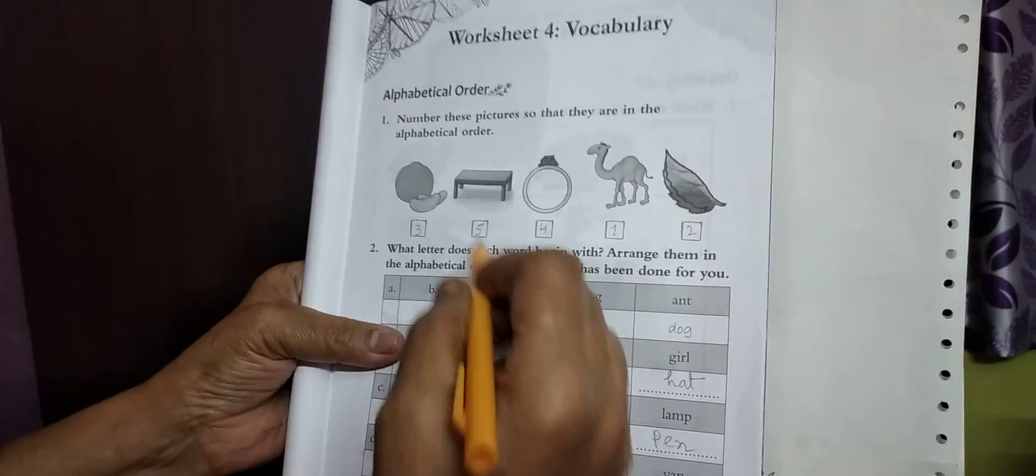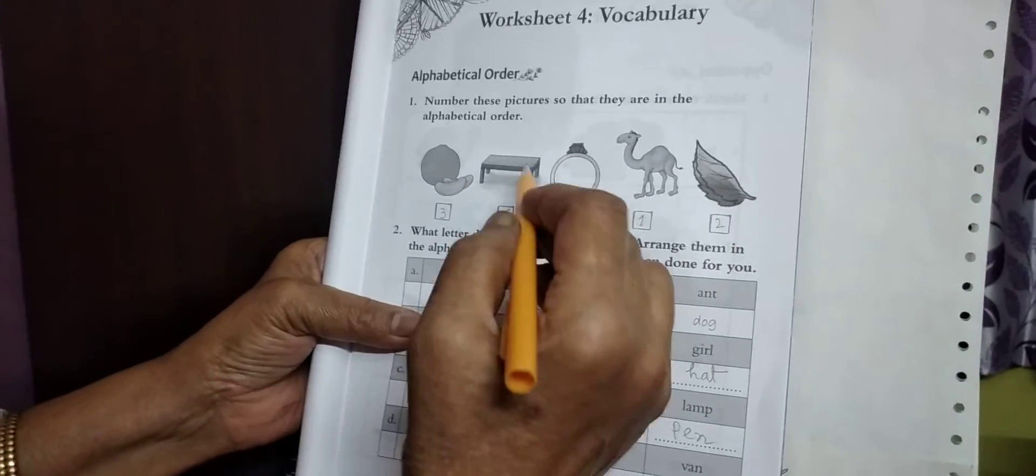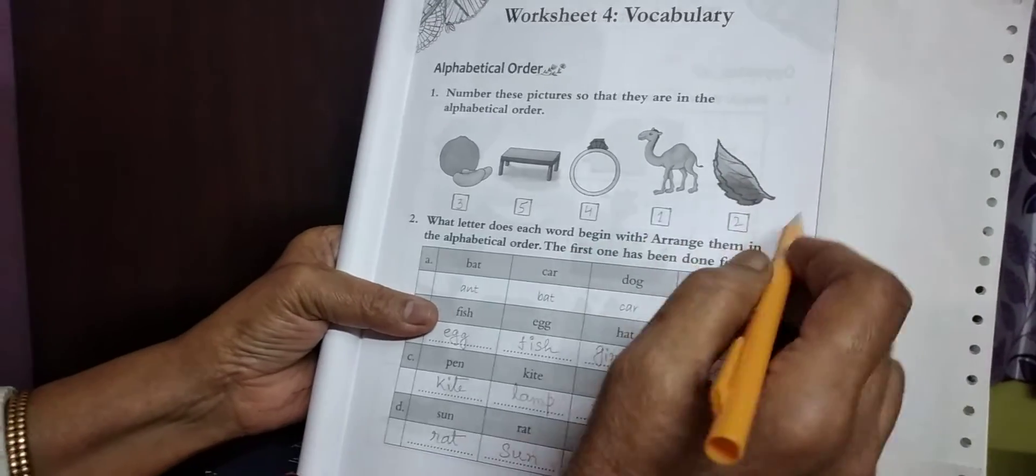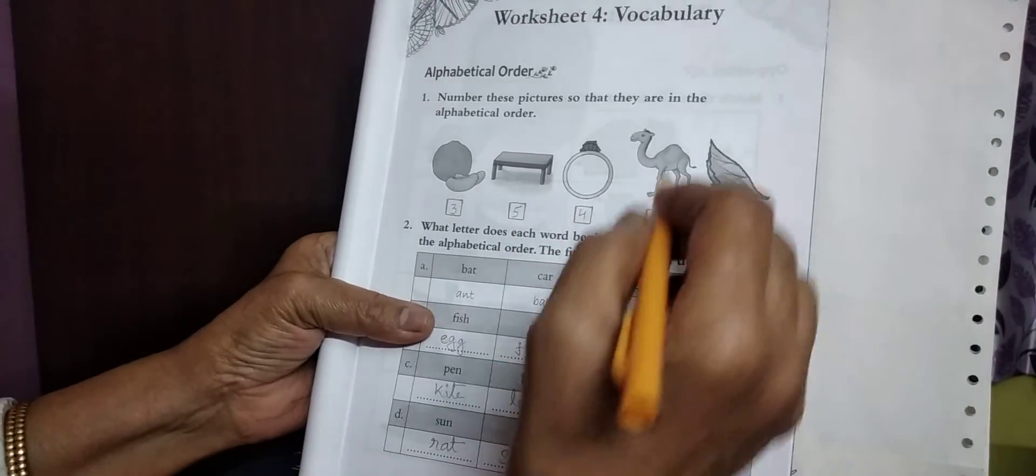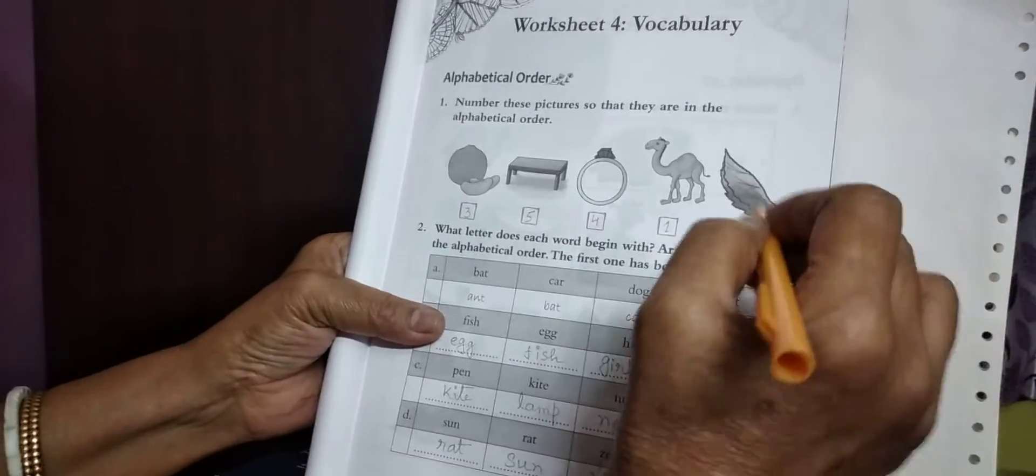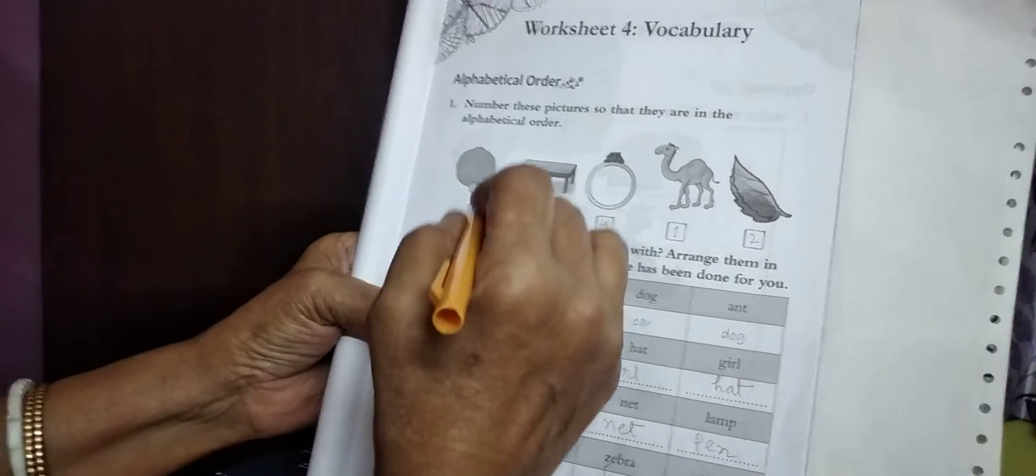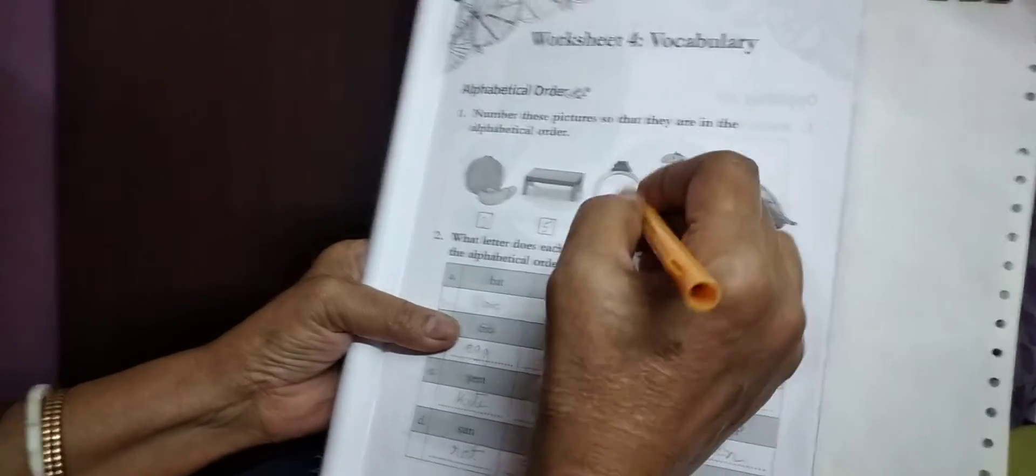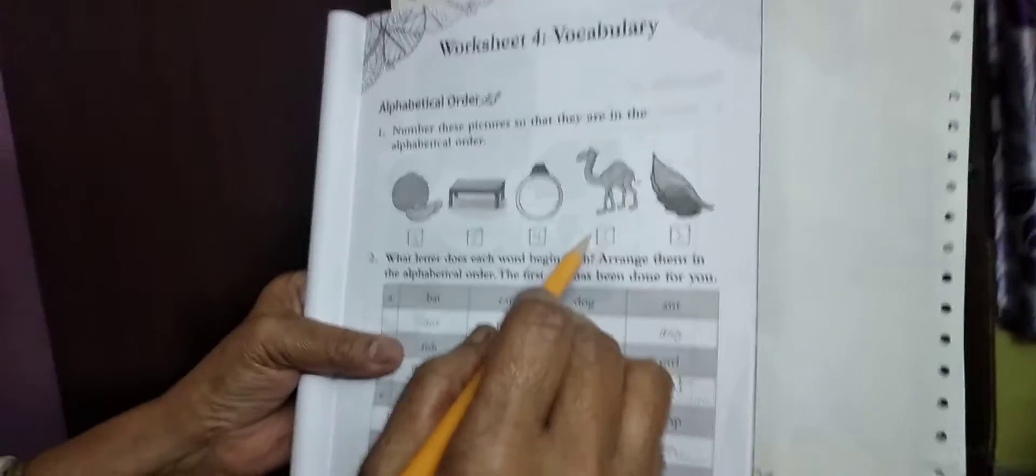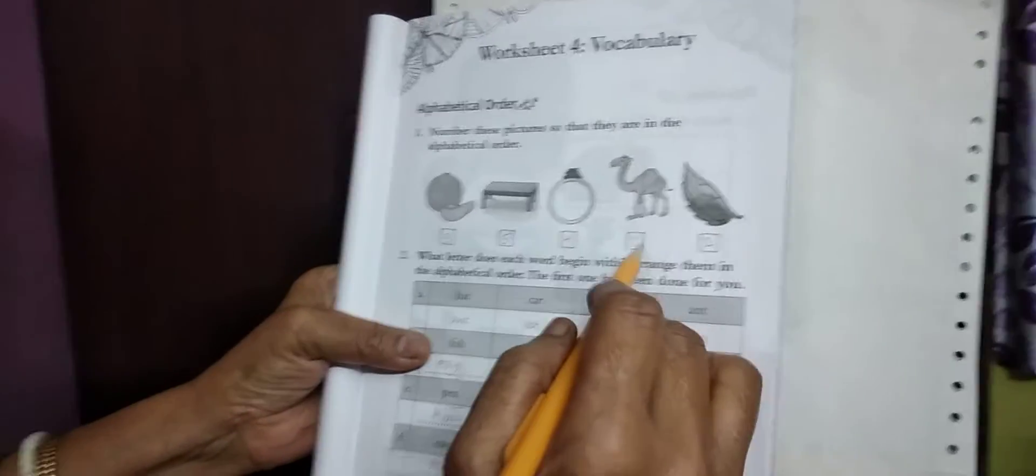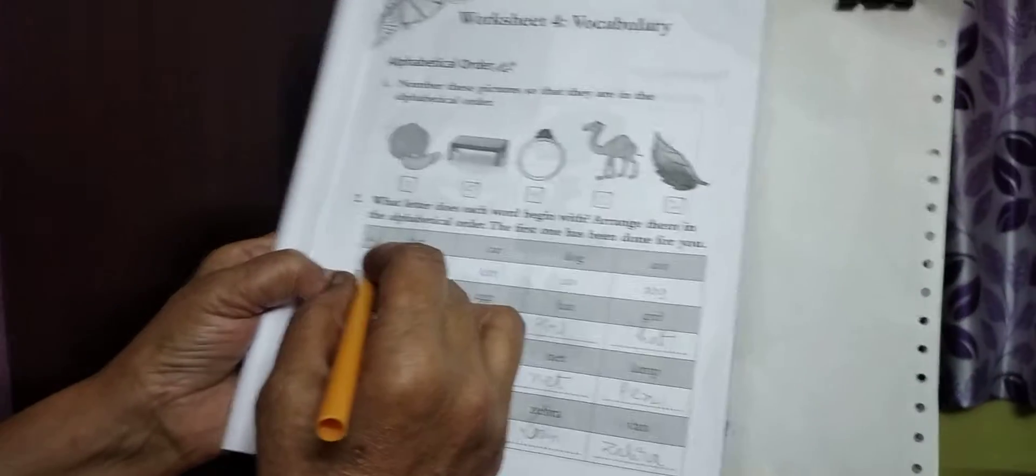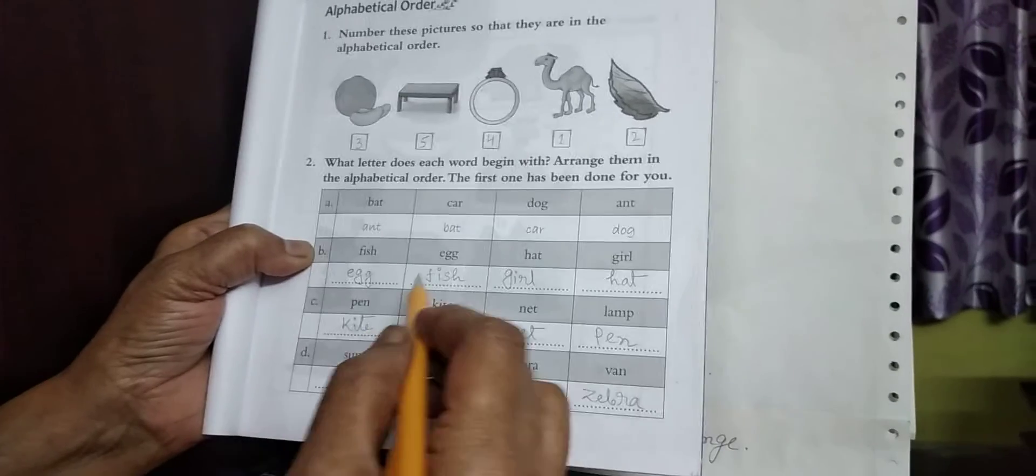Next, here are given: orange, table, ring, camel, leaf. Write them in alphabetical order. C for camel is A. Two, leaf is L. Number three, orange. Table becomes five. Here ring is four, table is five. One, two, one, two, three, four, five. This is how it's done. Now what is given?